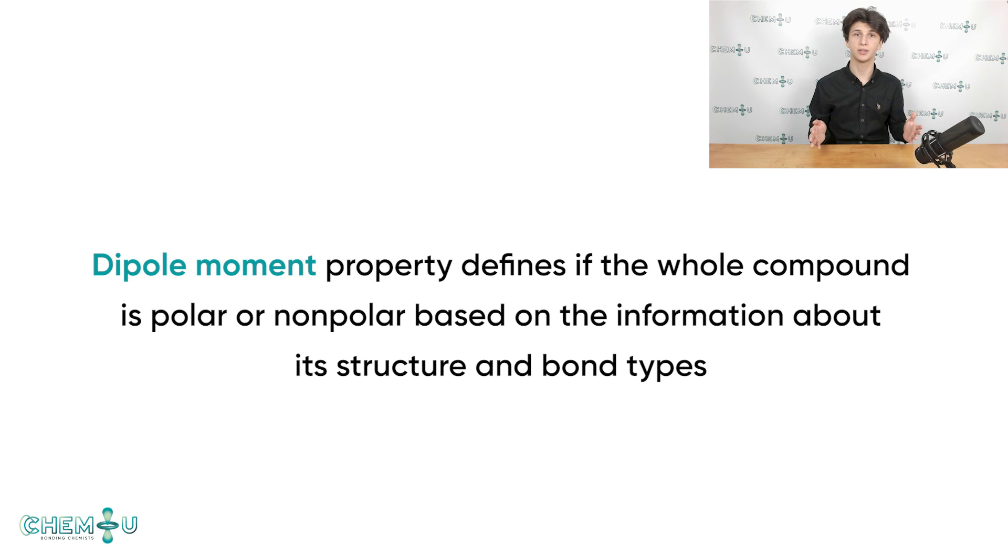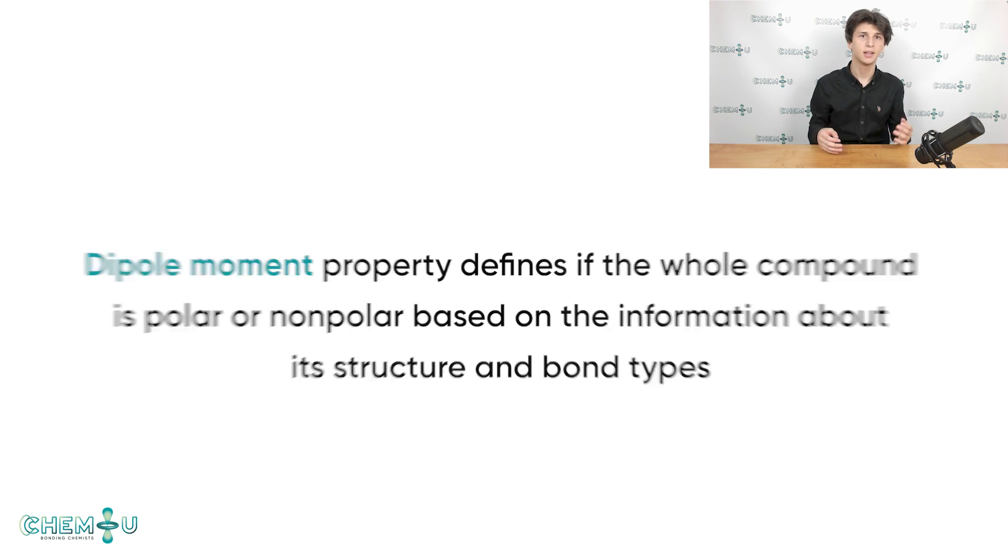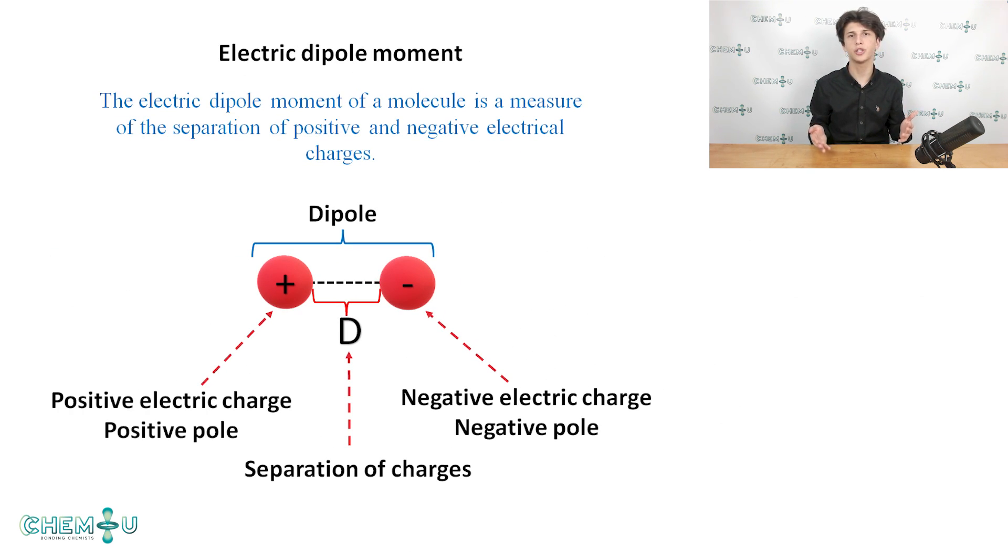The last topic we'll discuss today is the dipole moment. This property defines if the whole compound is polar or non-polar based on the information about its structure and bond types. The dipole moment is important for organic chemists because using it we can determine which solvents our compound is soluble in. It is reasonable to begin with the standard definition from physics. The electric dipole moment is a measure of the separation of positive and negative electrical charges within a system. That is a measure of the system's overall polarity. In other words, when two electrical charges of opposite sign are separated by a distance, an electric dipole is established.